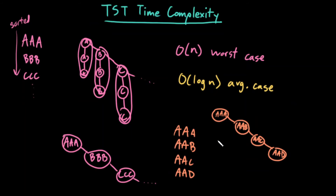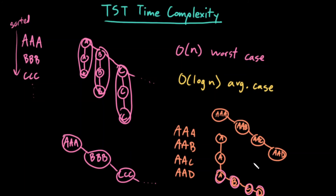In a TST, though, I would have the following situation: A, A, A, with B, C, and D as siblings, where really these four are word nodes. And if I was looking for the word A, A, E — the first A is equal, the second A is equal, and then E is greater than A so I go right, E is greater than B so I go right, E is greater than C so I go right, E is greater than D so I go right, and I failed. So I didn't have to do those first two comparisons each time. So if our words share similar prefixes, a TST actually works quite nicely.